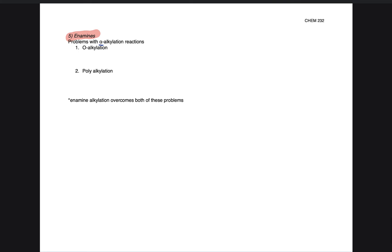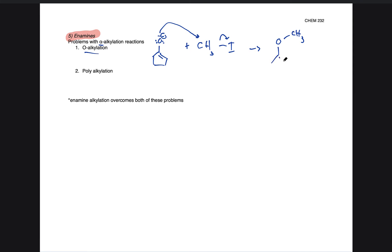One problem we talked about briefly is oxygen alkylation, where when we have our enolate, usually the nucleophilic carbon is the thing that attacks, but we can also potentially — and this is condition dependent — have the oxygen be the nucleophile instead, where the oxygen gets alkylated. It's not super common, again depending on conditions, but it is a potential problem that can occur.